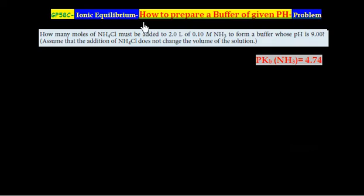Now this problem illustrates how to prepare a buffer of given pH. The question says how many moles of NH4Cl must be added to a 2 liter solution of 0.1M NH3 to form a buffer whose pH is 9. Assume that the addition of NH4Cl does not change the volume of solution.